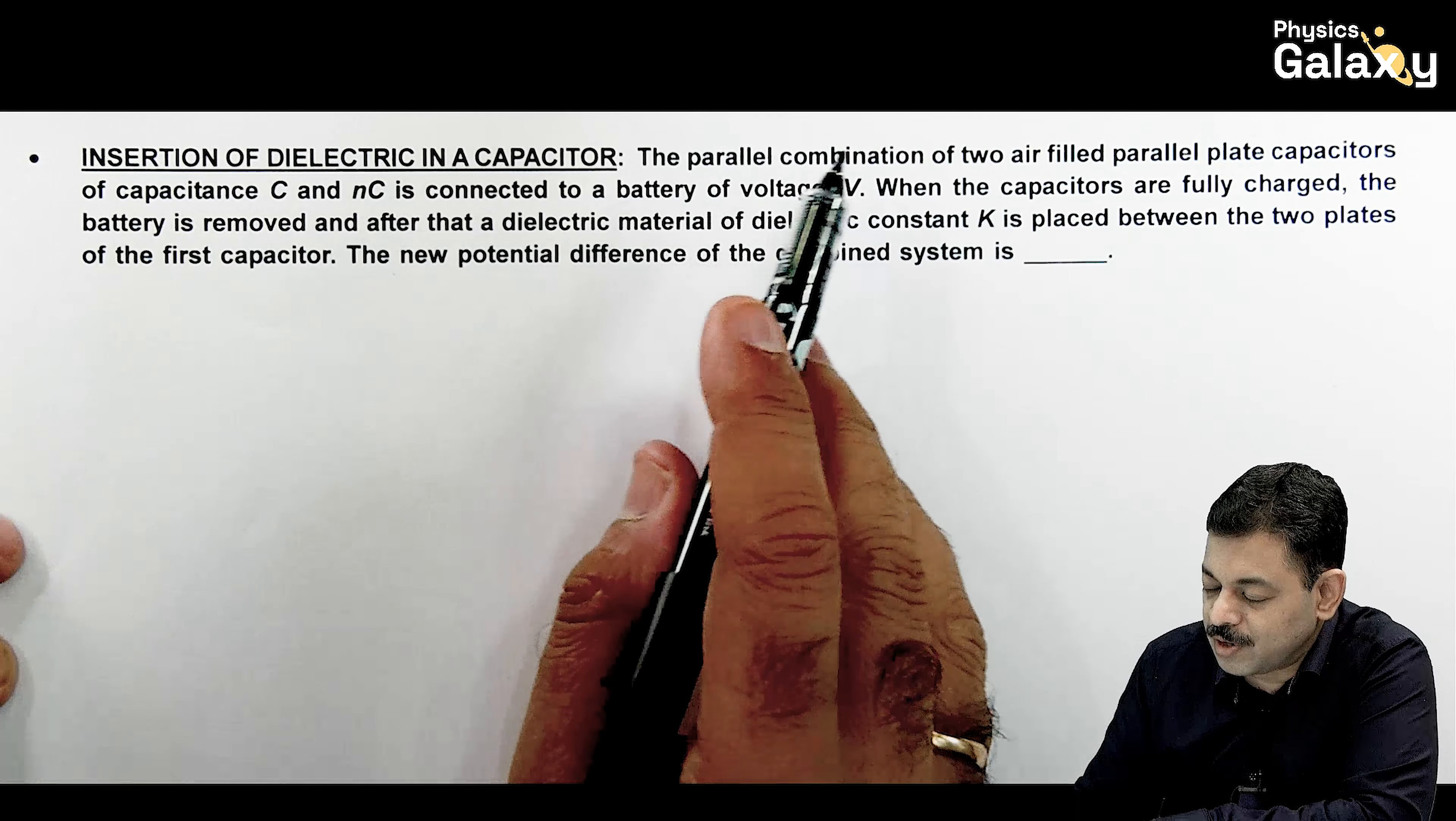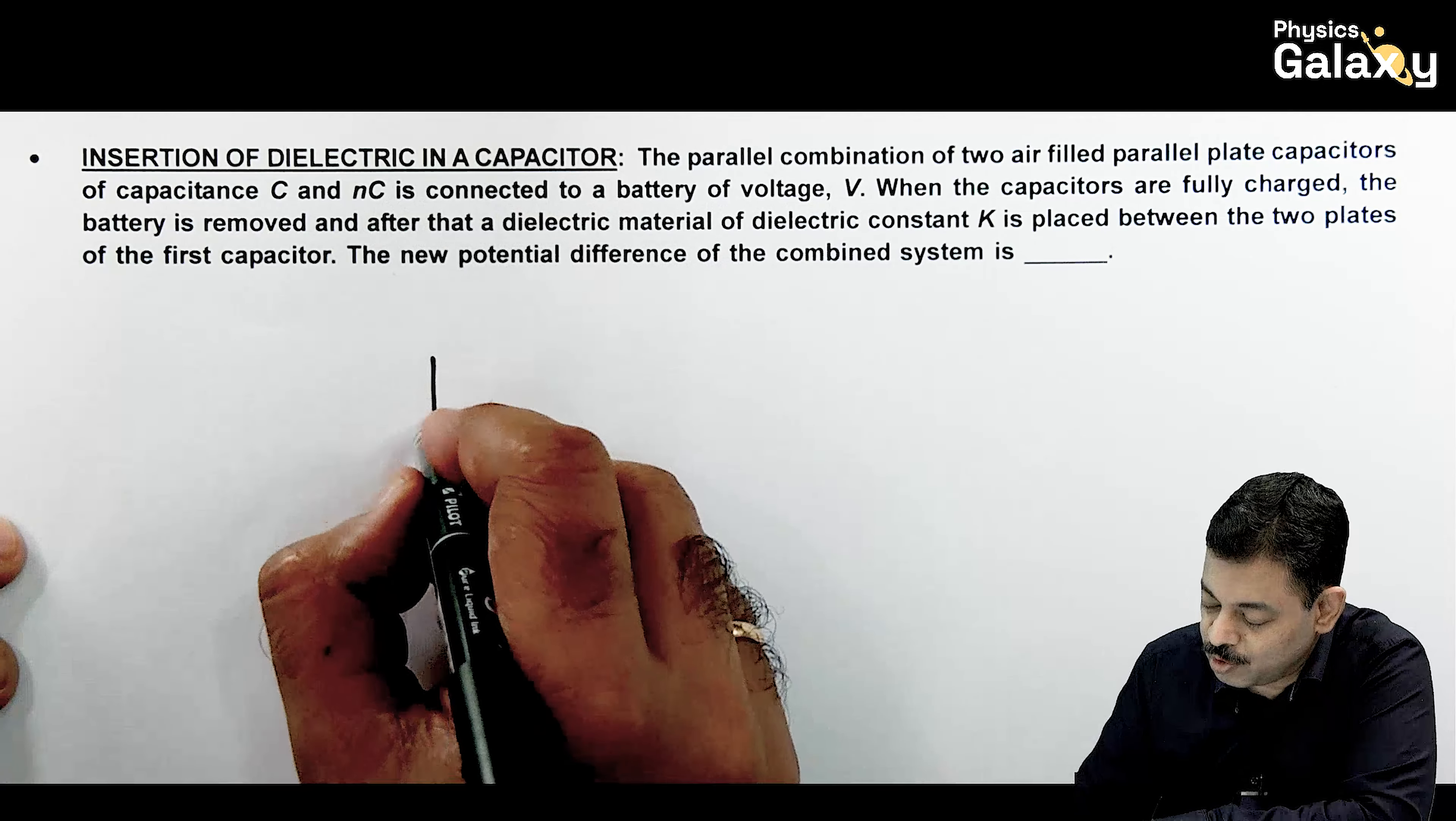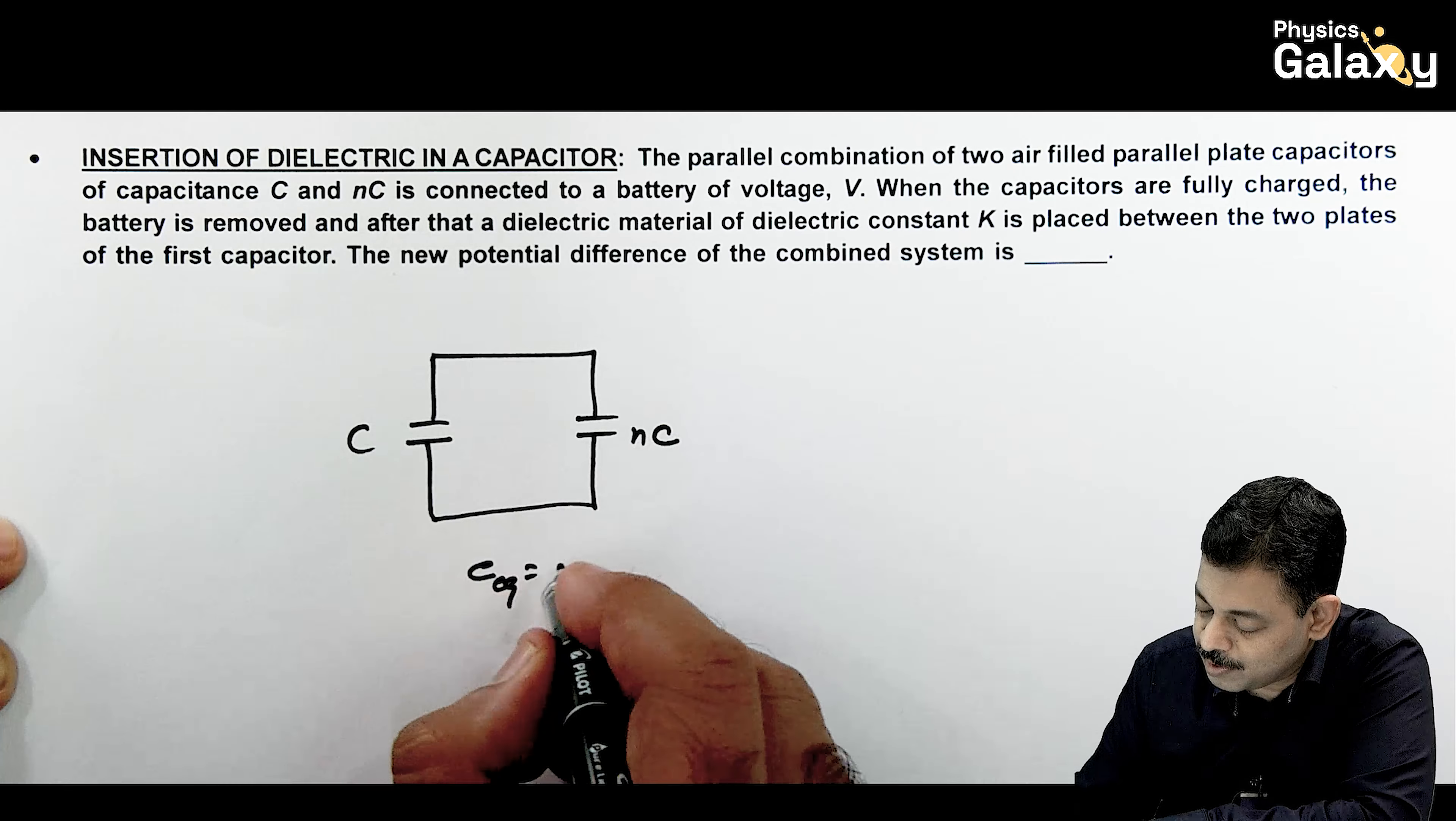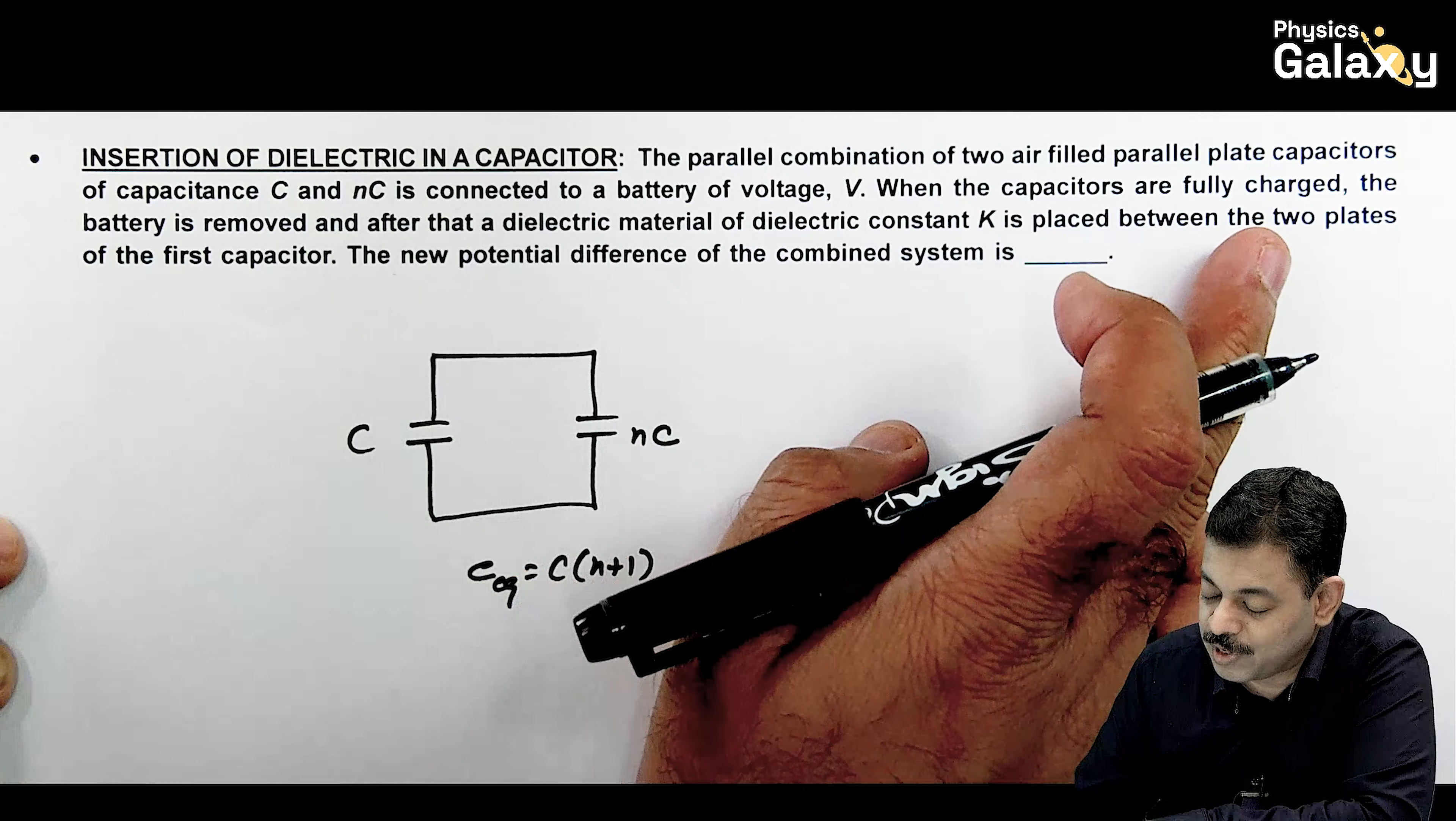It says the parallel combination of two air-filled parallel plate capacitors of capacitance C and NC is connected to a battery of voltage V. It means two parallel plate capacitors in parallel combination, one C and one here is NC. So we can write C_eq directly as this plus this which is C times (N+1). And this is connected across a battery of voltage V, so it will receive a charge and the capacitors are fully charged.